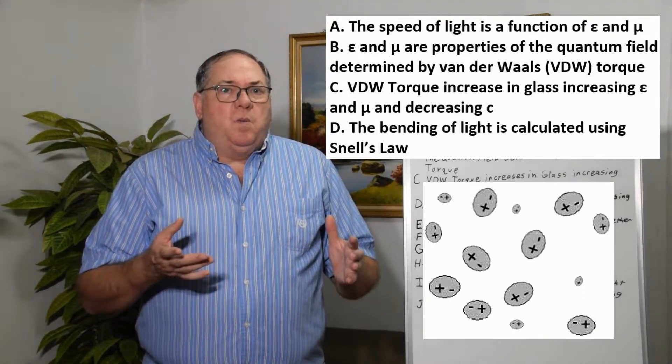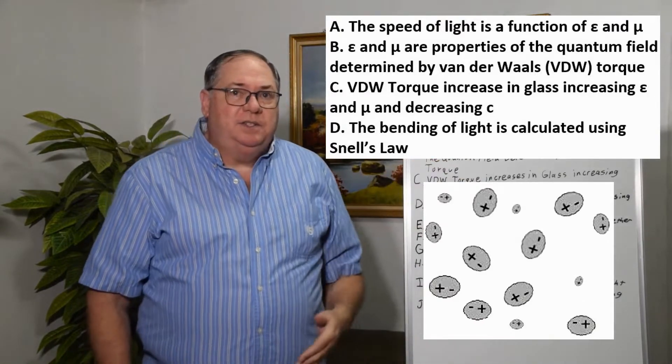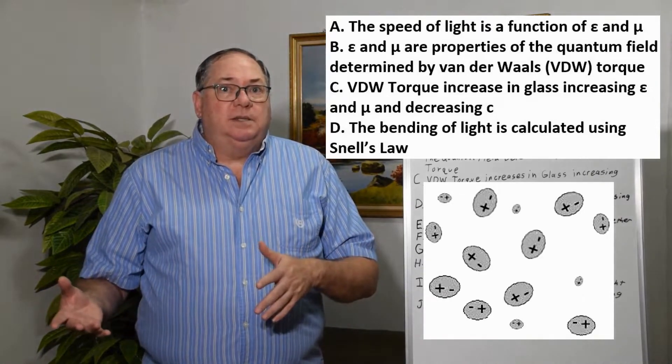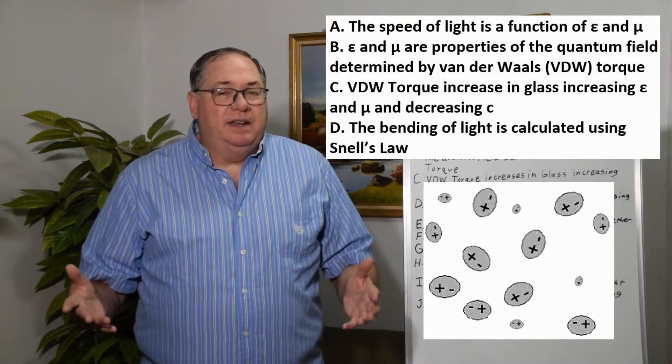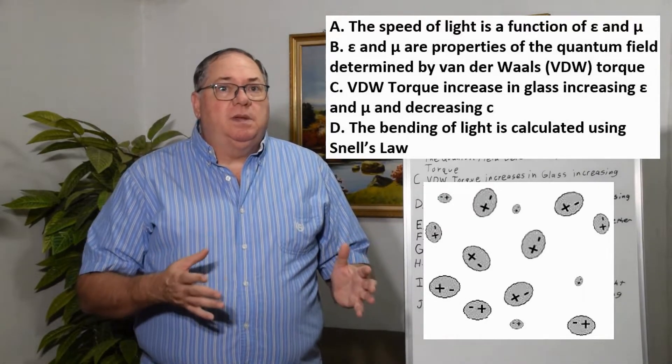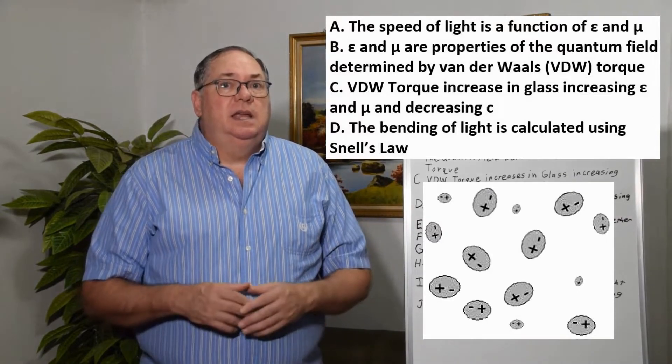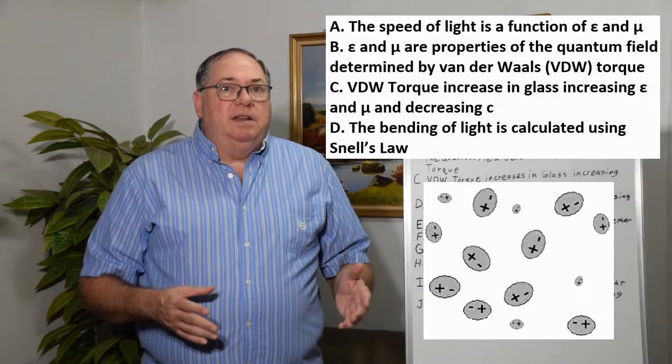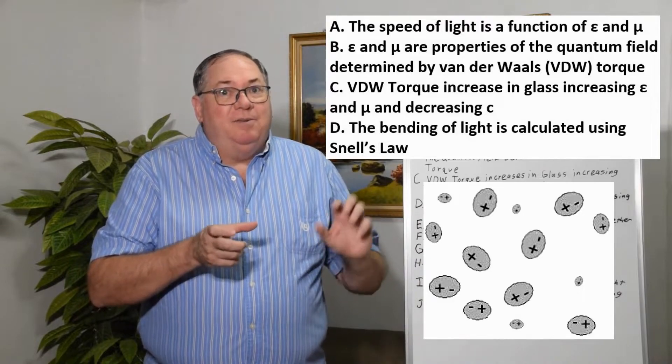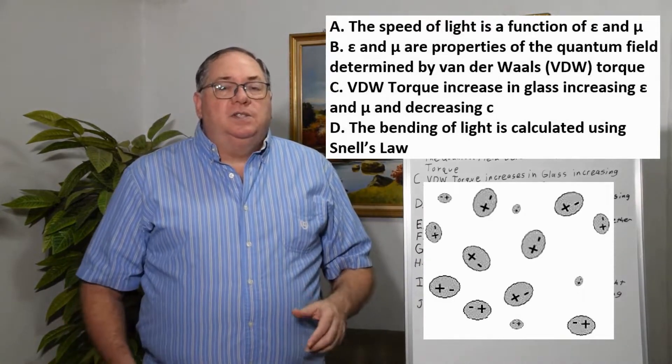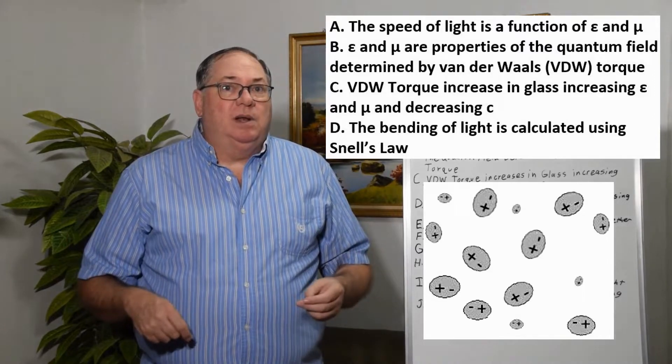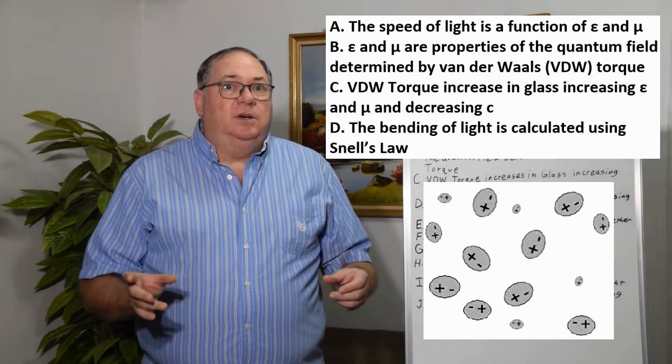We can also know, as I've discussed in other videos, the permittivity and permeability emerge from a polarizable quantum field. This is something Dickey mentioned in 1957. When you have a polarizable medium, those become fundamental constants that are emergent properties. When a dipole rotates it makes other dipoles rotate, but they don't want to rotate so it resists, creating torque. The torque determines how rapidly you can polarize or magnetize the quantum field. The torque determines the speed of light.